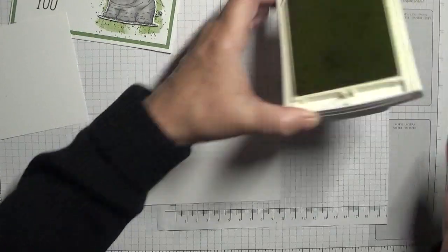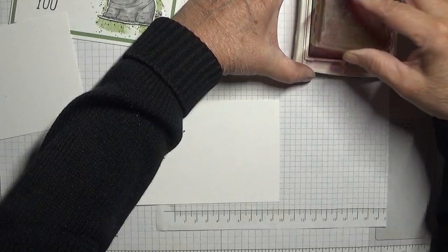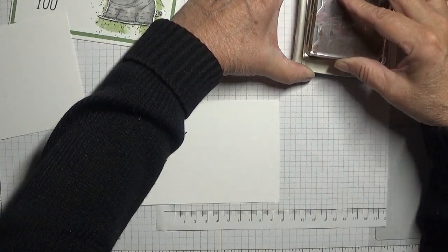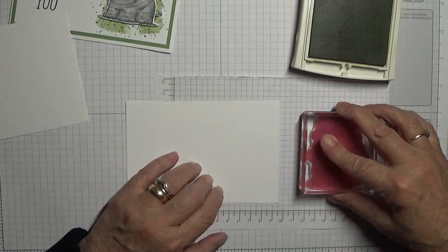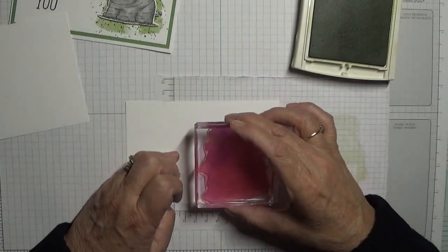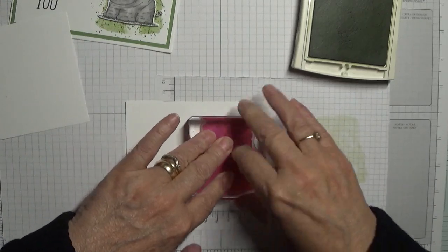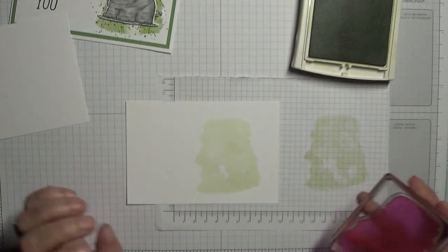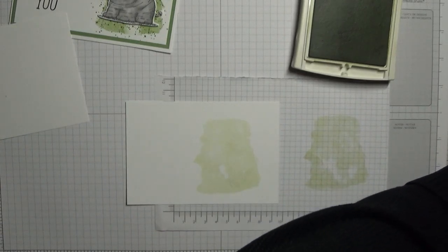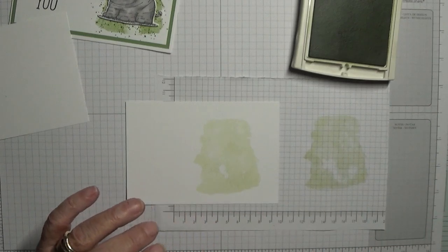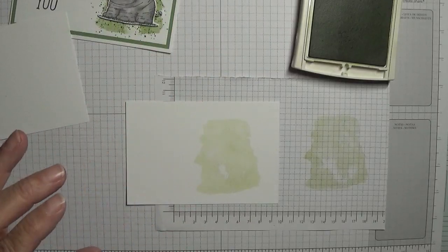Oh sorry, I didn't say what ink we're using, pear pizzazz. So inking that up, I'm going to stamp off. It's very pale. Stamp on there, that's fine. Clean the stamp.